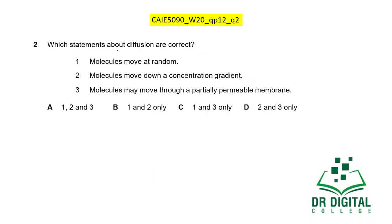In this question, which statements about diffusion are correct? Statement 1: Molecules move at random — yes, molecules move at random in diffusion because they move by Brownian movement. Statement 2: Molecules move down the concentration gradient — yes, they move from higher to lower concentration. Statement 3: Molecules may move through a partially permeable membrane — yes, diffusion can occur through a partially permeable membrane or without any membrane. So 1, 2, and 3 are all correct. The answer is A.